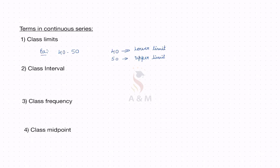Next is class interval. The difference between the upper and lower limit is the class interval. So in this continuous series, if it is 40 to 50, the difference — that is 50 minus 40 — is equal to 10. This 10 is nothing but the class interval. Next is class frequency: this is the number of observations corresponding to a particular class, known as class frequency.